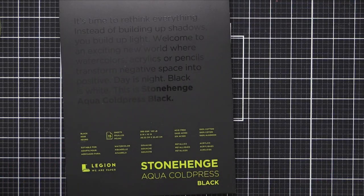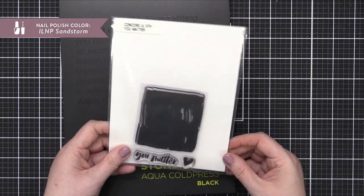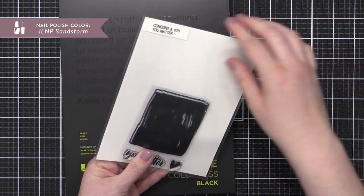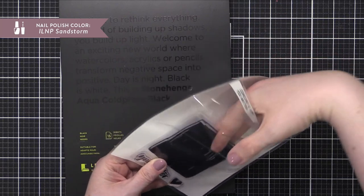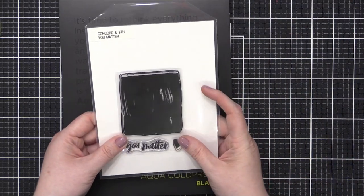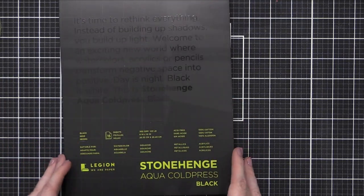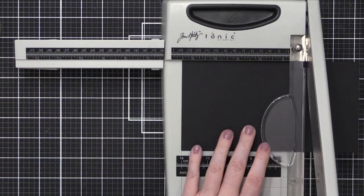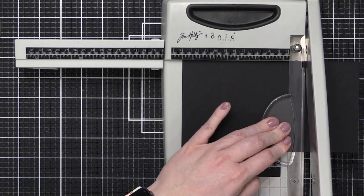I really wanted to use the metallic watercolor paints from Altenew on this black watercolor paper today. And I also wanted to use the You Matter stamp set and see if I could stamp with the metallic watercolor. So this is a little bit of an experiment for me. I'm sure someone else has tried this sometime in the past, but I have never seen it. I've never tried it myself. So I thought I'd try it today.